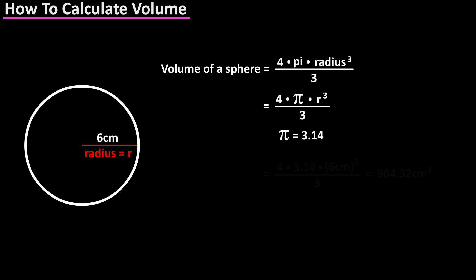From the diagram we have 4 times 3.14 times 6 centimeters to the third divided by 3. Calculating out, we get 904.32 centimeters cubed.